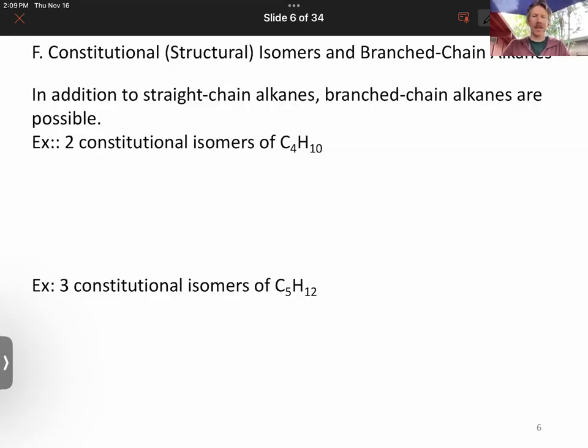Now let's talk about constitutional, also called structural isomers, and branched-chain alkanes. In addition to straight-chain alkanes, which we said were called N-alkanes or N-butane for example, branched-chain alkanes are possible.